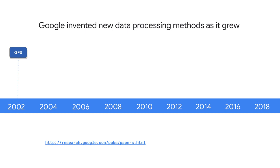One of Google's next challenges was to figure out how to index the exploding volume of content on the web. To solve this, in 2004, Google invented a new style of data processing known as MapReduce to manage large-scale data processing across large clusters of commodity servers.